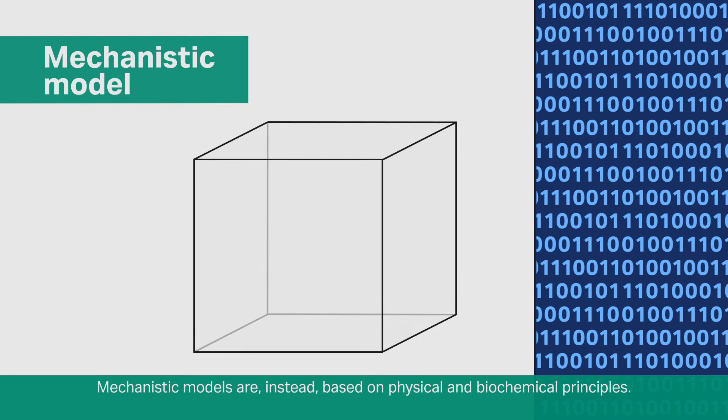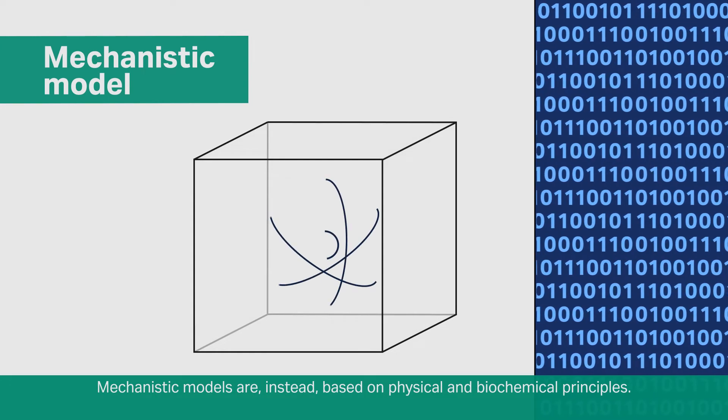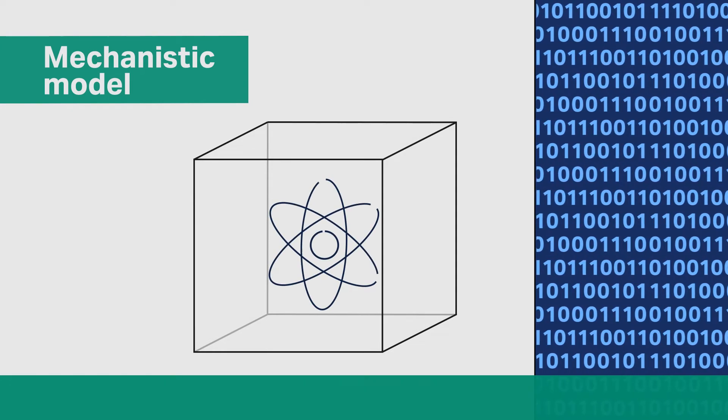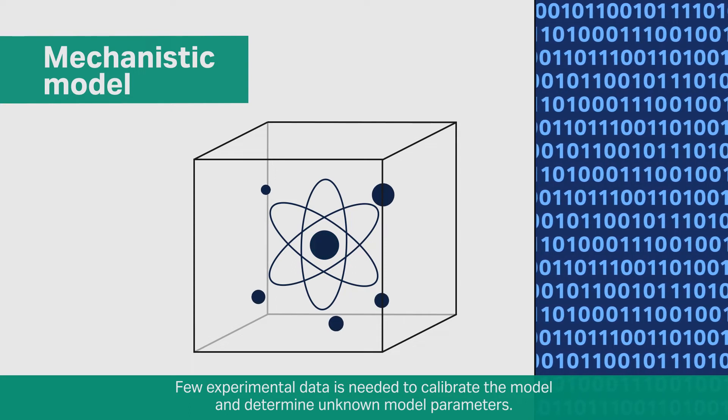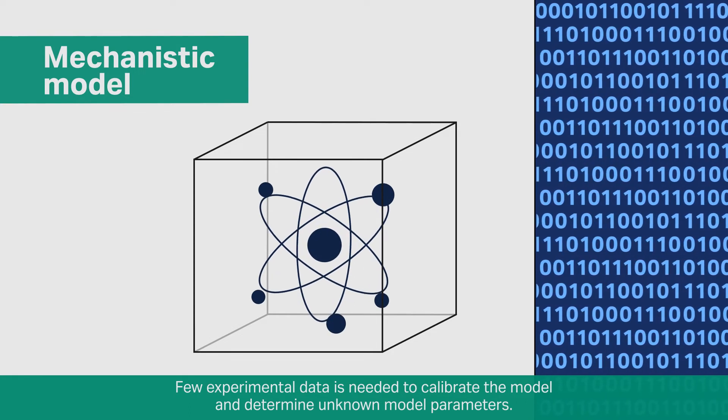Mechanistic models are, instead, based on physical and biochemical principles. Few experimental data is needed to calibrate the model and determine unknown model parameters.